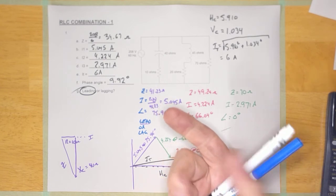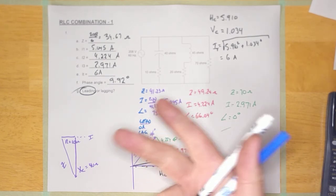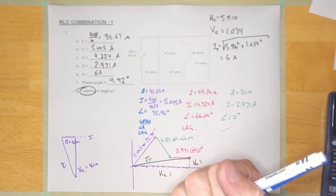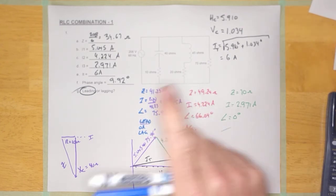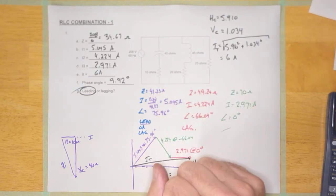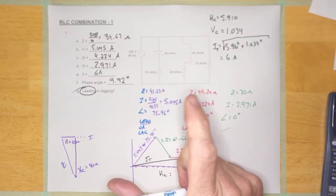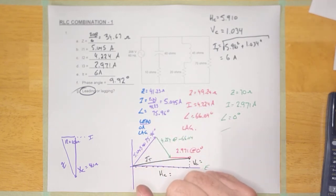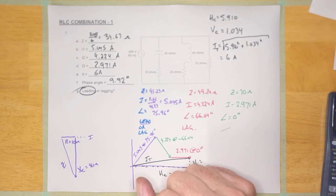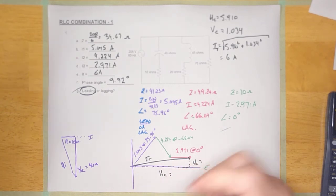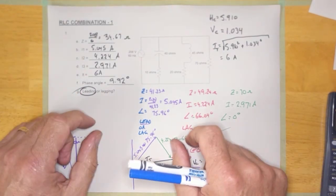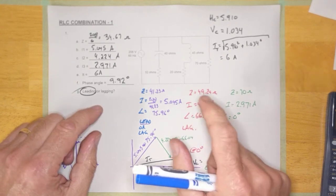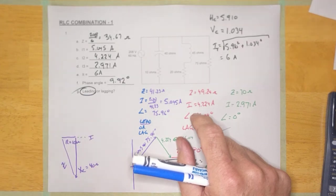With series circuits you had two options — impedance phasors and voltage phasors. With parallel circuits you only had current phasors, and you wouldn't believe how many students try to use impedance phasors on a parallel circuit. With combination circuits it's a bit of both. Unit 2, Handout 4 is great practice for all of that. The next thing we'll learn is power and power factor correction, and you can't do any of that without mastering series, parallel, and combination circuits. Thanks for hanging in there — hope you have a good day.